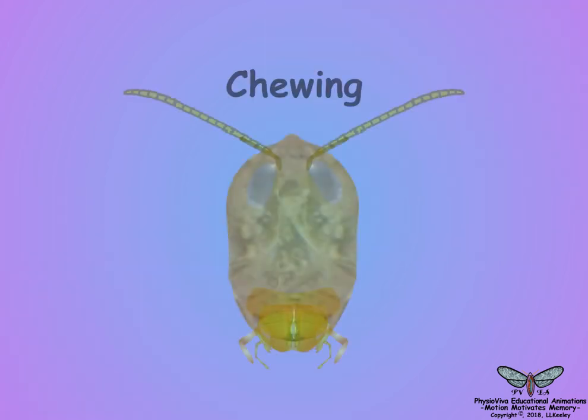Chewing mouthparts are for biting and breaking solid food. The grasshopper chewing mouth will illustrate the general structure and organization of the insect mouth.